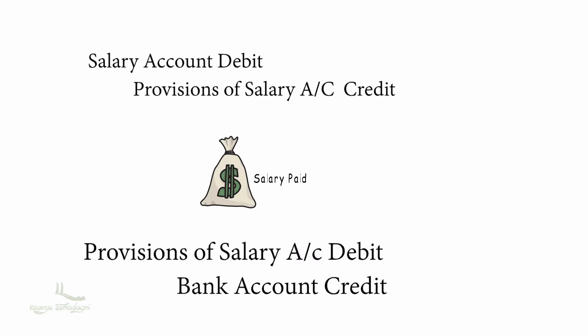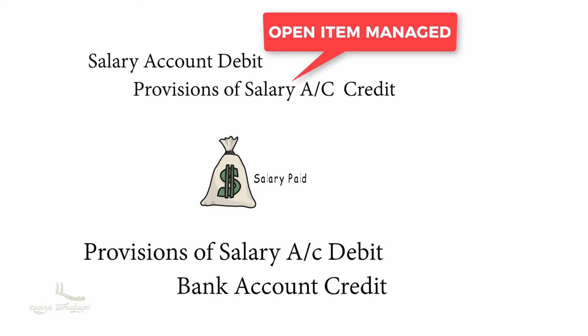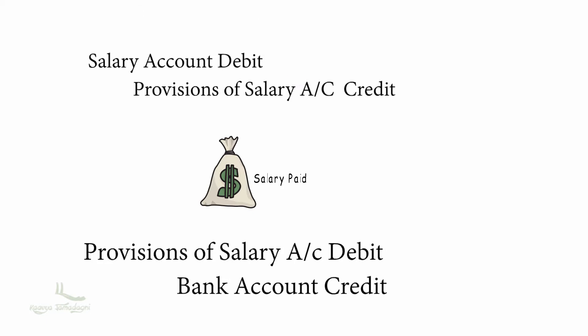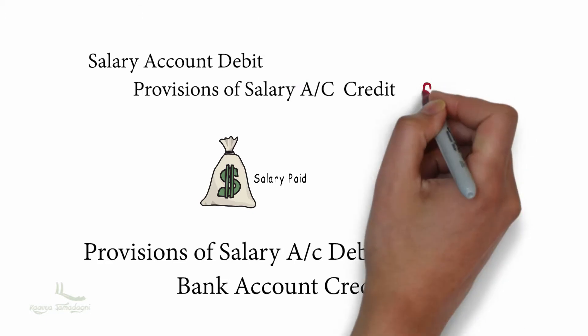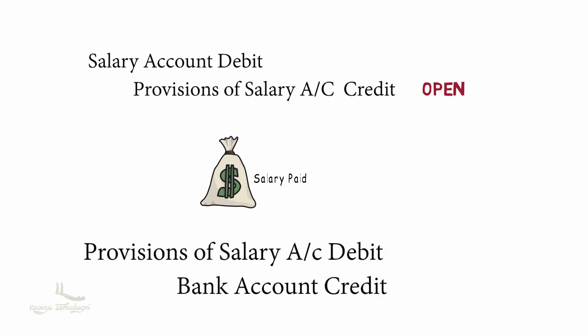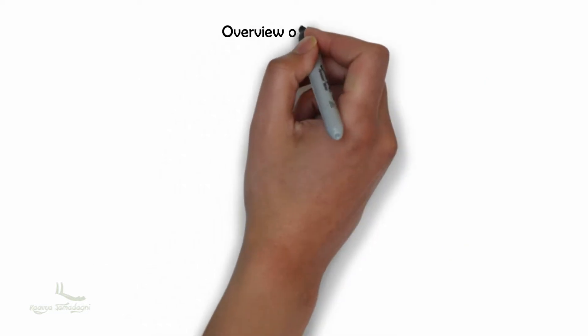I will make the provisions of salary account as open item managed, so that after the first journal posting, the provisions of salary account will show as open in our line item report. When the actual salary is released, the open items are cleared. Let me give you the overview of the activities we will be performing in the SAP system for these journal entries.